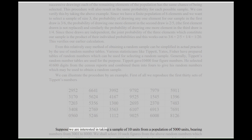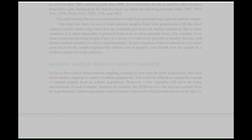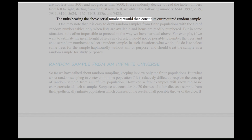First of all, we reproduce the first 30 sets of Tippett's numbers. Suppose we are interested in taking a sample of 10 units from a population of 5,000 units bearing numbers from 3,001 to 8,000. We shall select 10 such figures from the random numbers which are not less than 3,001 and not greater than 8,000. If we randomly decide to read the table numbers from left to right, starting from the first row itself, we obtain the required numbers. The units bearing those serial numbers would then constitute our required random sample.